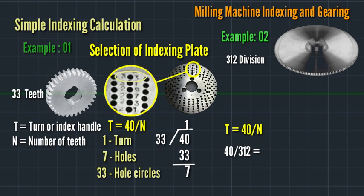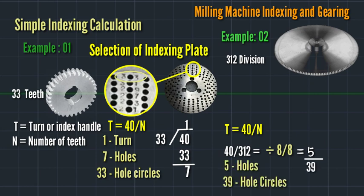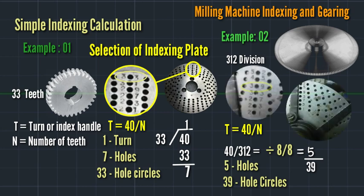We can use 8. So 40 divided by 8, that is 5. Then 312 divided by 8, that is 39. So 5 holes in 39 hole circle. We can use an indexing plate with 39 hole circle and 5 holes.